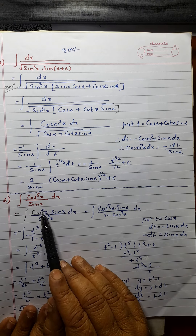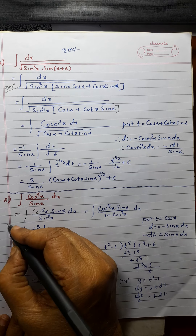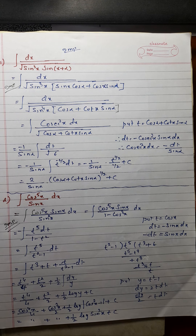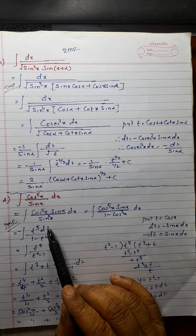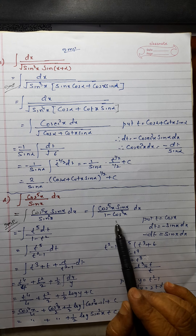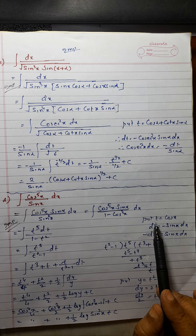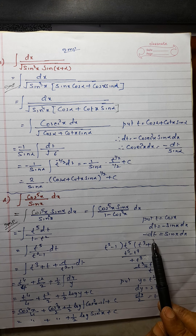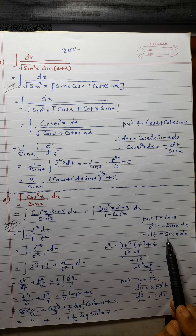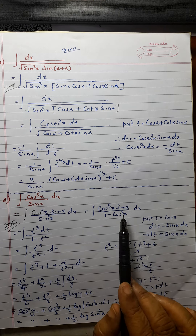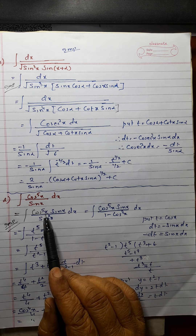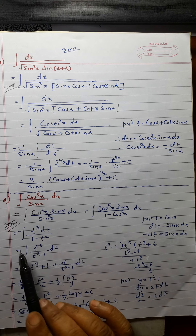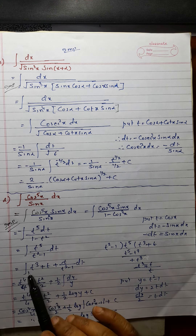This is also an important problem — the starting step is important and you should remember the method. I will multiply and divide by sin x. This will become sin square x, which I will write as 1 minus cos square x. Now I will put t equal to cos x. So dt will be minus sin x dx — that is, minus dt will be sin x dx. So this sin x dx becomes minus dt, and this will be t raised to 5 upon 1 minus t square. Taking the negative sign inside, it will become t raised to 5 upon t square minus 1.